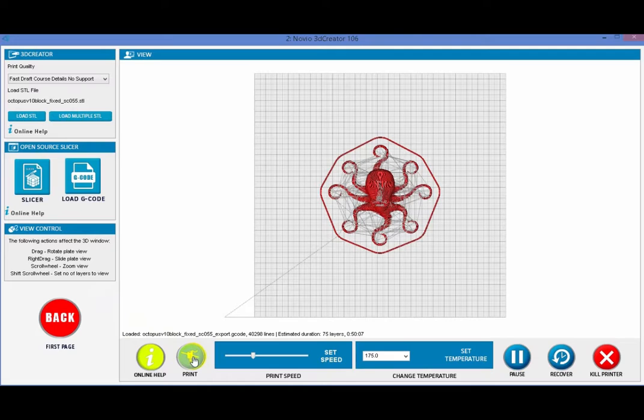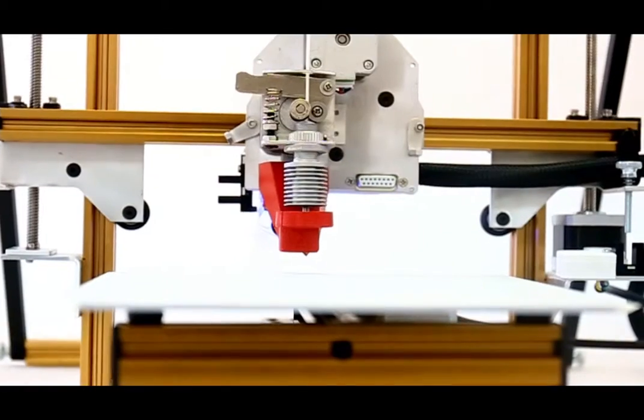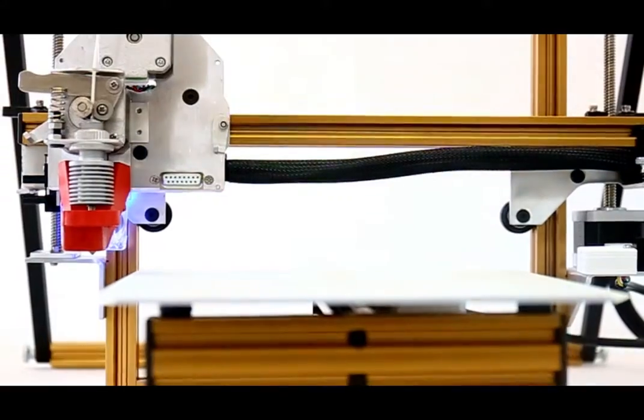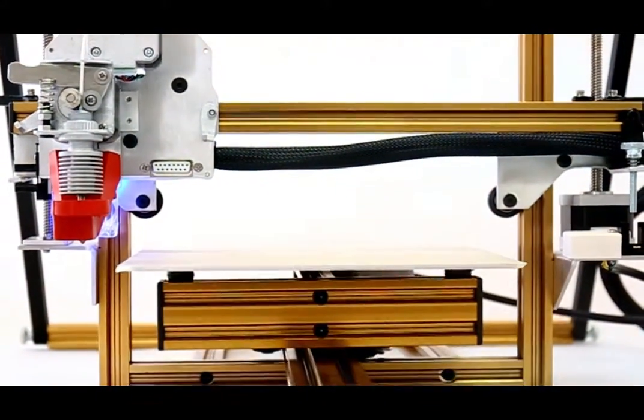Then, hit the Print Green button at the bottom part of the window. The printer will execute the XYZ homing position.